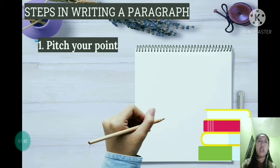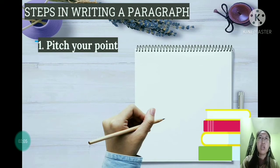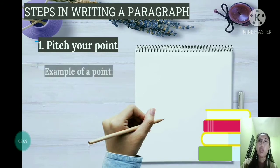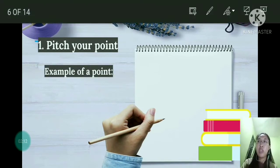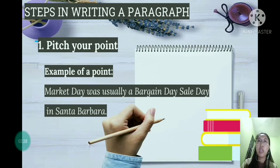Here are the steps in writing a paragraph. First, we have 'Picture Point.' This means figuring out very well what you want to drive home to your reader or listener and laying it down. It is what you want your reader to know about your paragraph. An example of a point is: 'Market day was usually a bargain day sale in Santa Barbara.' You can usually find this in the first sentence of the paragraph.